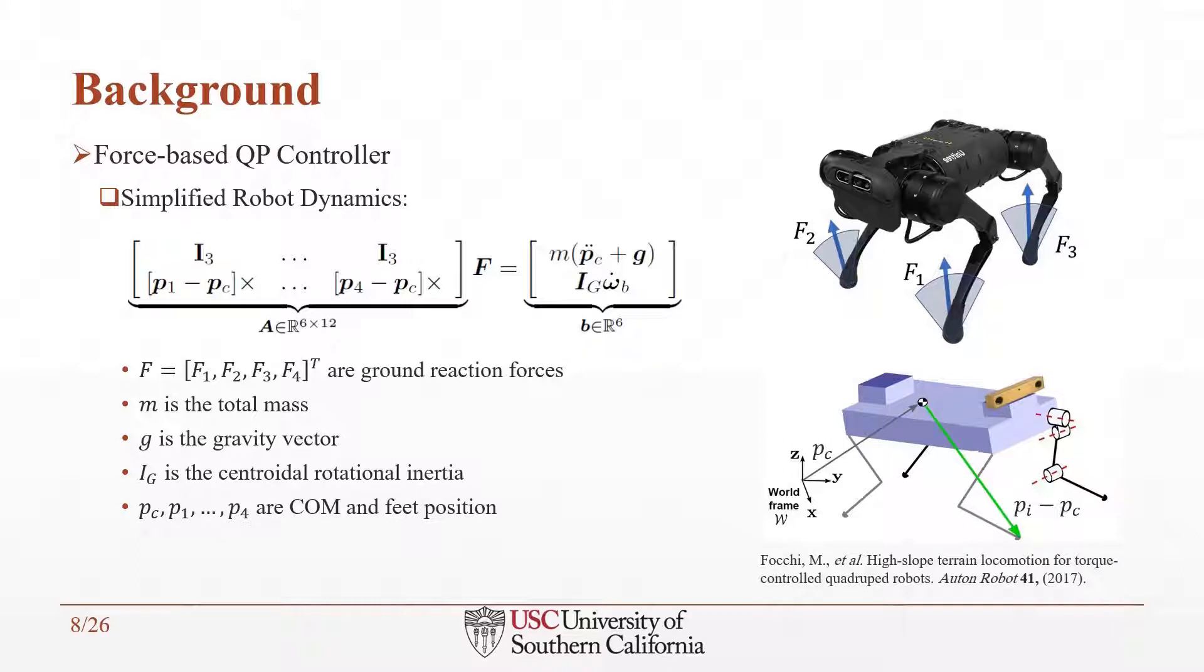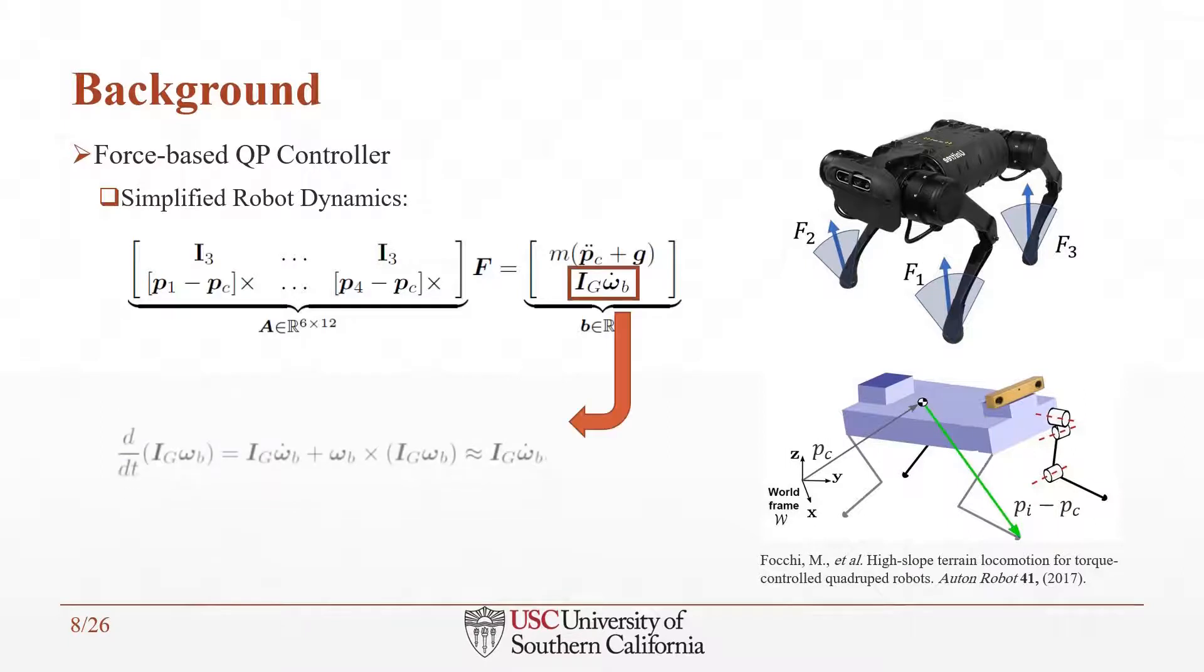It is a simplified dynamic model since we made a few assumptions. Under the assumption of a small angular velocity, this term is relatively small and therefore it would be ignored in this framework. Also, we assume that the leg's inertia is negligible. The reason we use simplified dynamics in our framework is that we can easily present the dynamics model in a quadratic form, and then we can apply QP optimization for solving the equation.